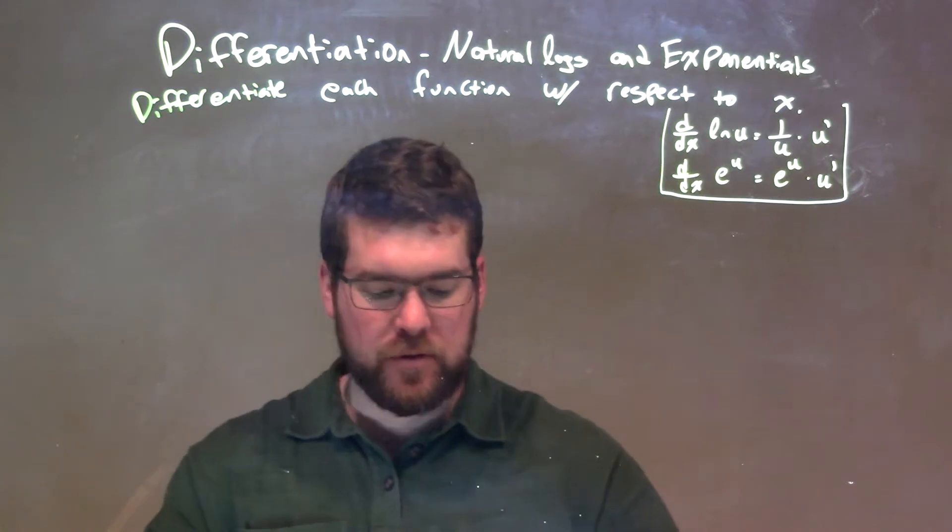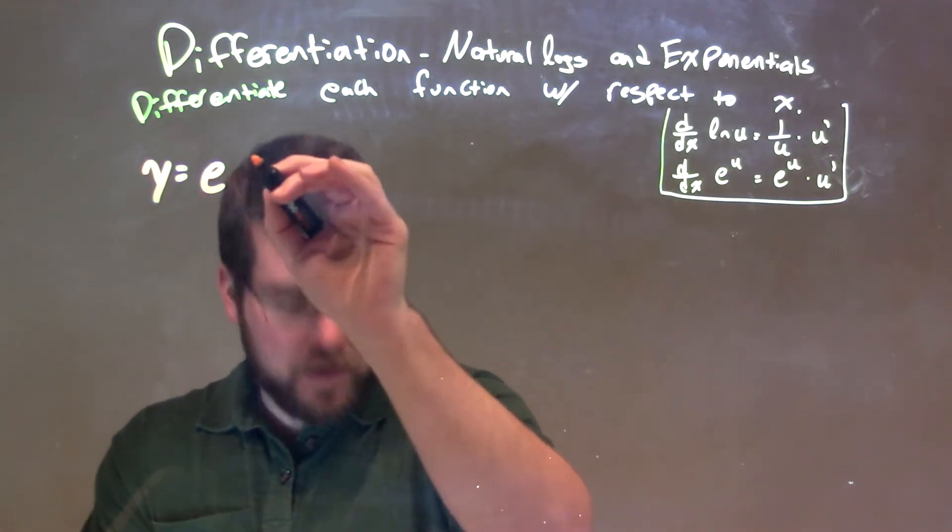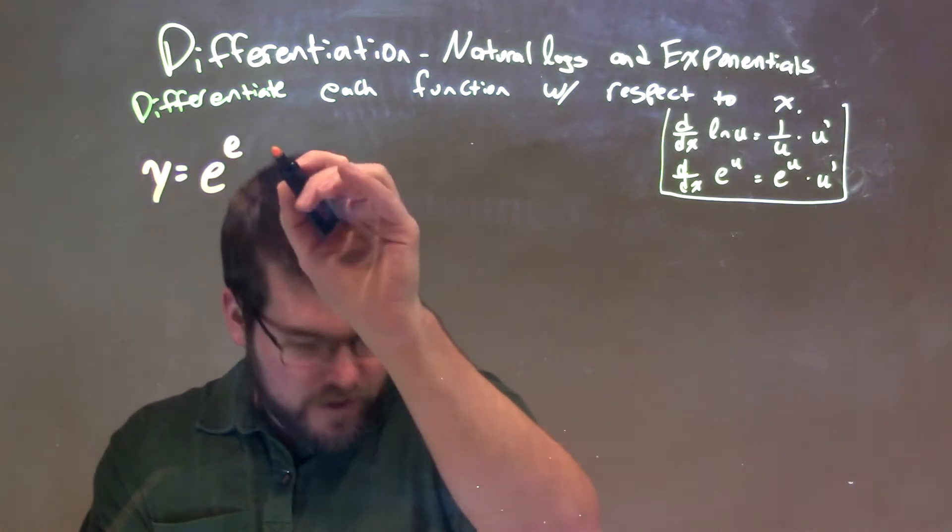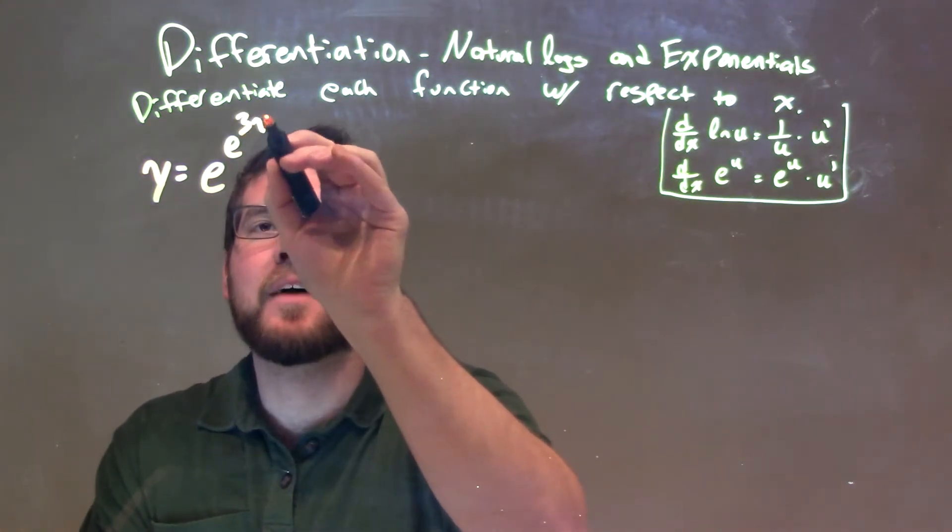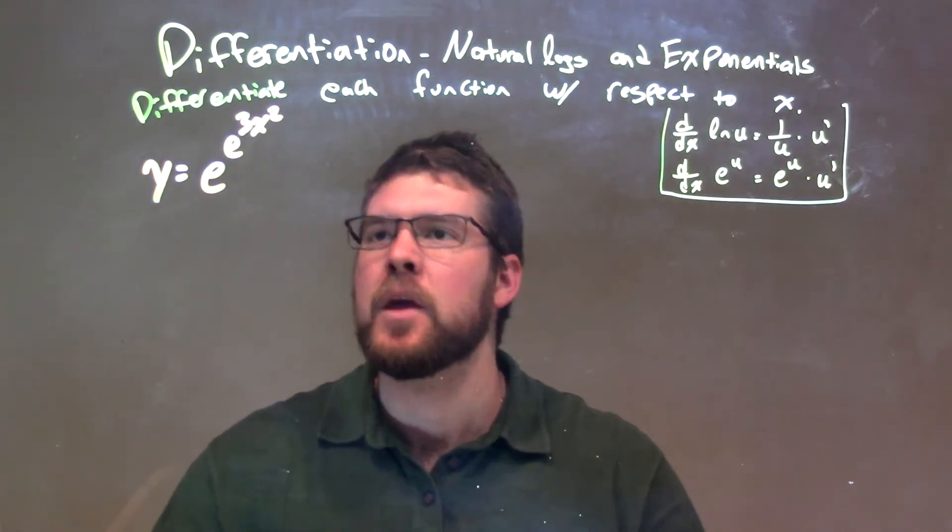So if I was given this function, y equals e to the e to the 3x squared power, double exponent here, right? Well, what I want to do when I'm taking the derivative...